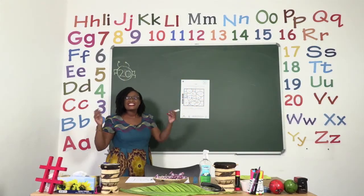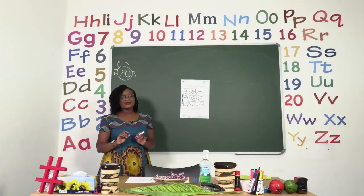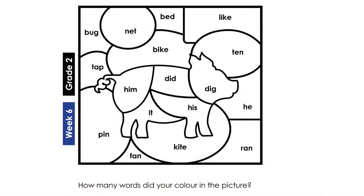For our next exercise, boys and girls, we are going to go to page 20. On page 20, we are now dealing with words that have 'ee' in them. Everyone, let's say: Eek! Well done. Sometimes the word can have an 'i' sound in it instead of 'ee'. It is going to be our job to colour in all the 'ee' words that we can see, and we are going to use red.